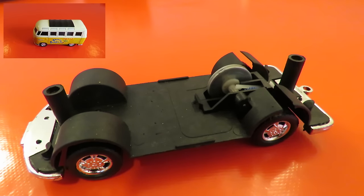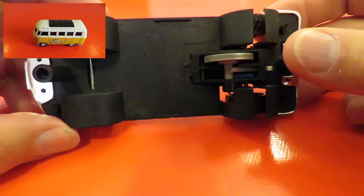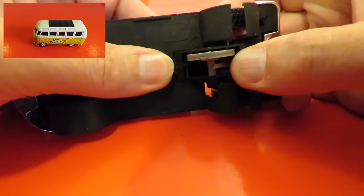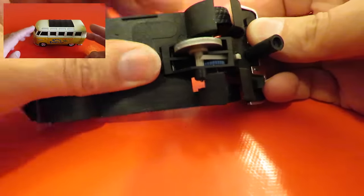This is the chassis out of that toy camper van I was working on recently, and the motor just pops out of it if I bend it the right way.